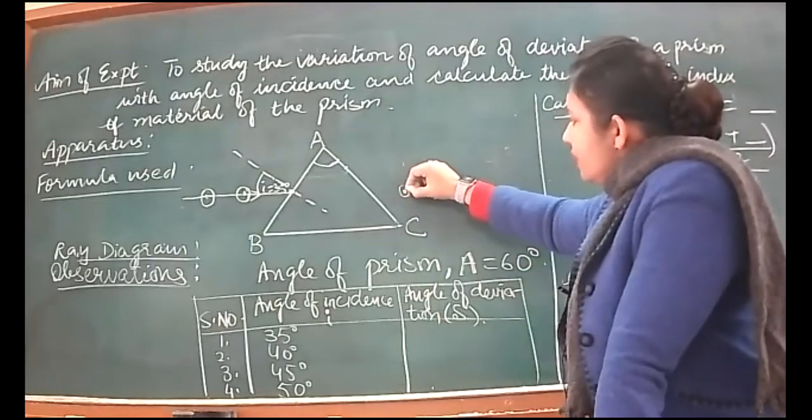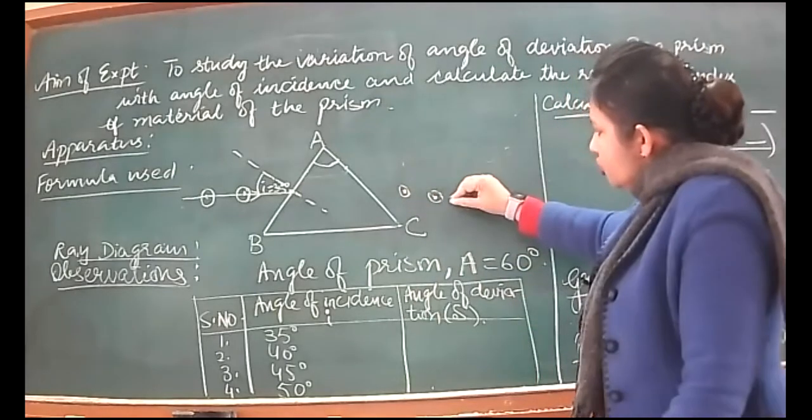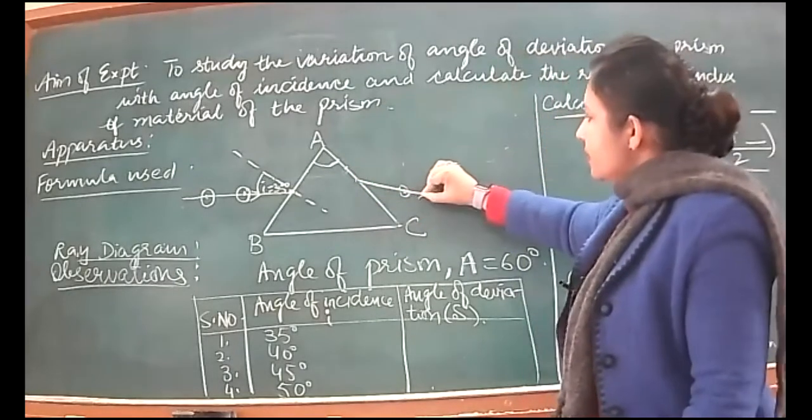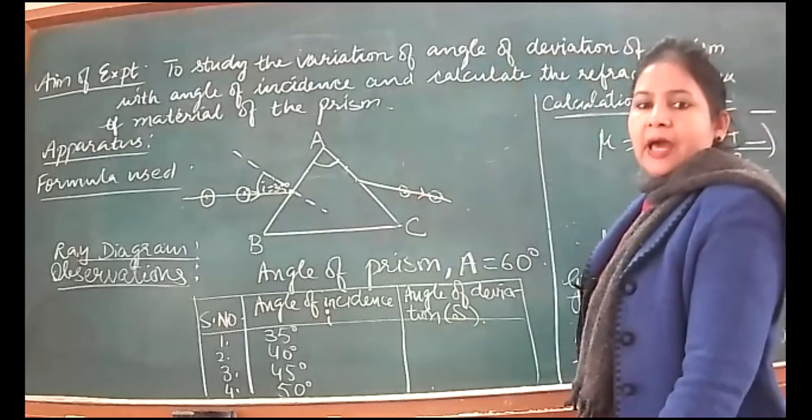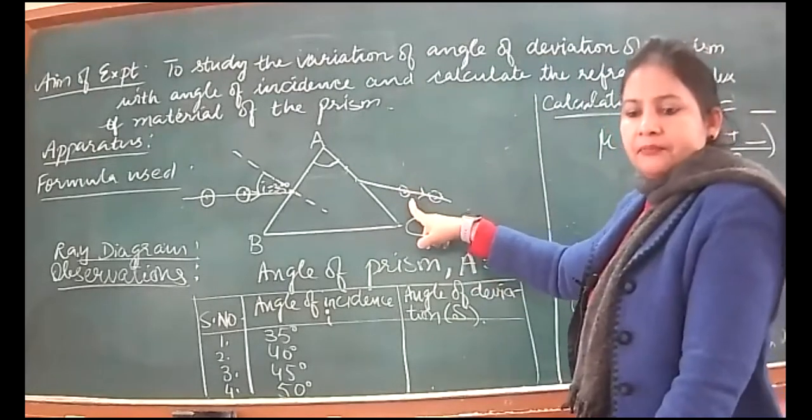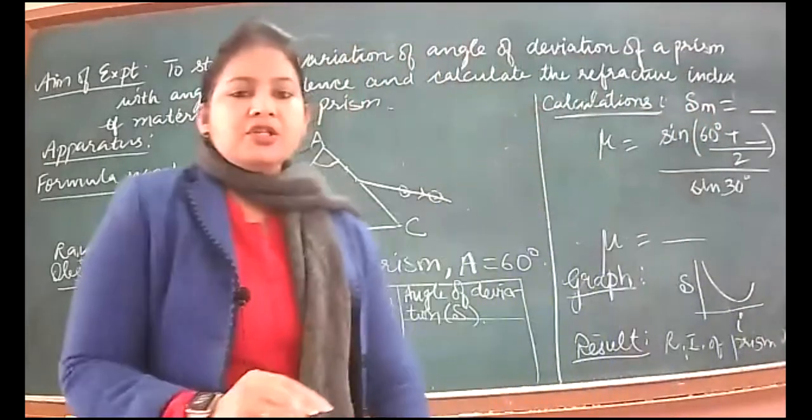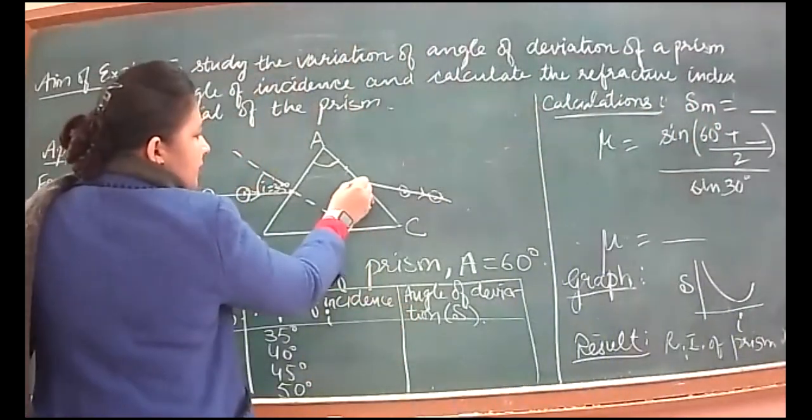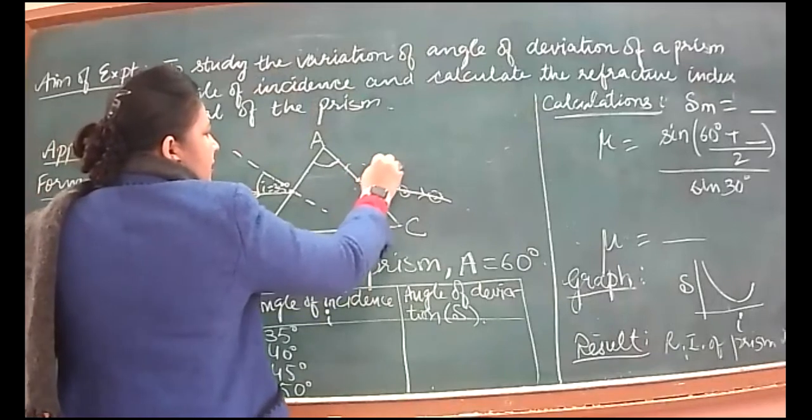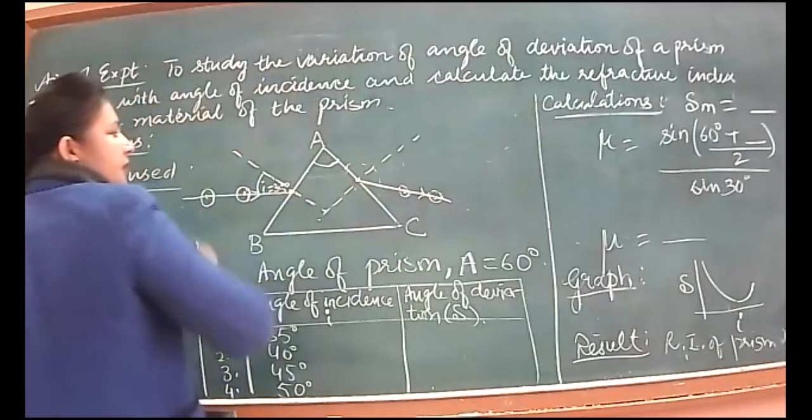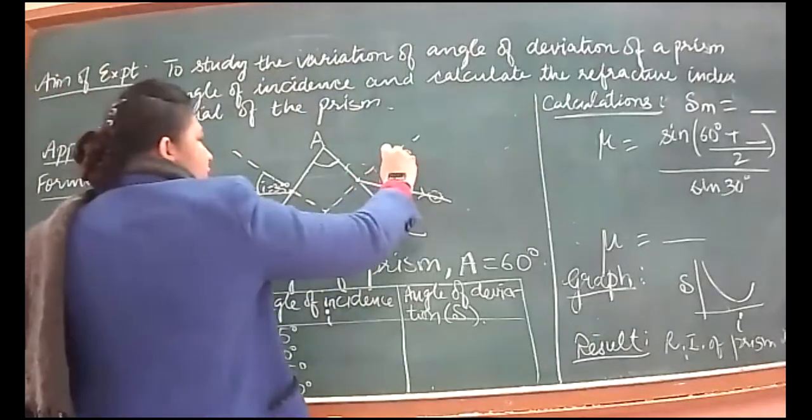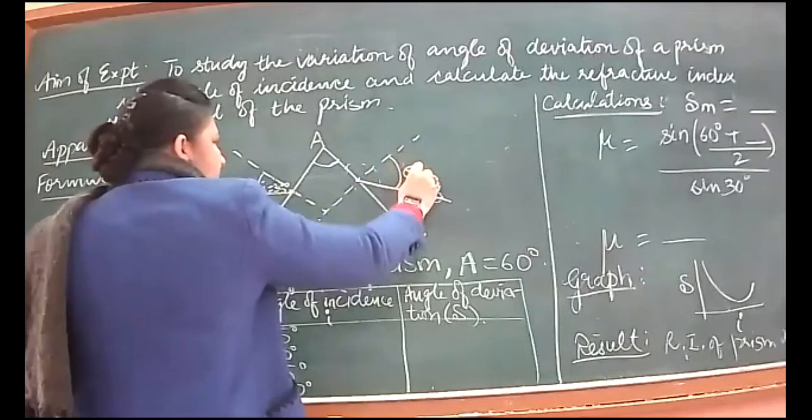Then we will remove the pins and join a line, taking that line backward. This will give me the emergent ray. Then at the point where this meets, I keep the protractor here again and mark a normal. The normals may meet here, no problem. And measure the angle of emergence E.